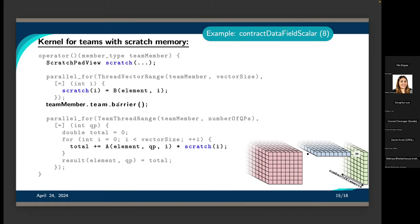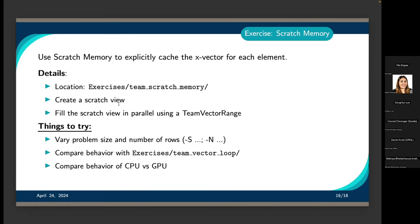We can go ahead and head to the exercise — it's 'exercises/team_scratch_memory' — where we'll do exactly what we've covered in the slides. It's the same setup as the previous exercises and we're going to cache our X vector for each element. We can vary the problem size and the number of rows to see how that affects performance, and we'll show some performance data after.